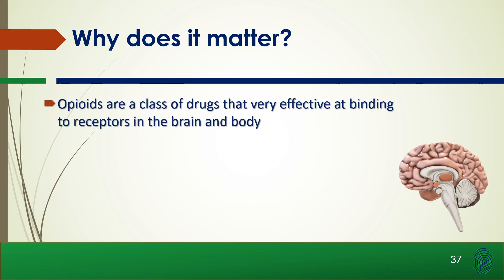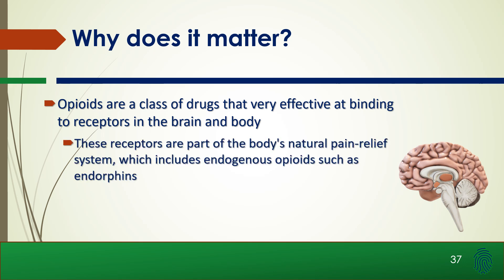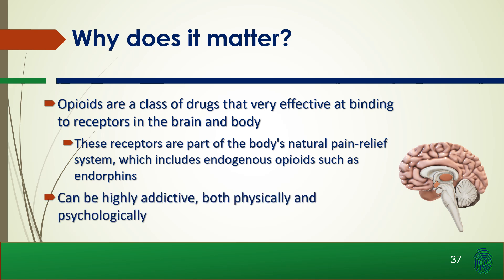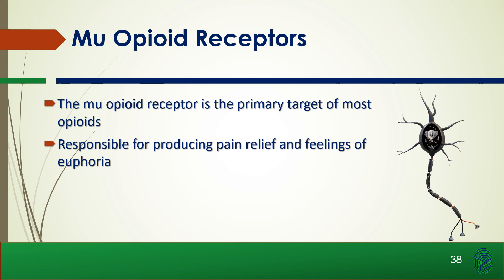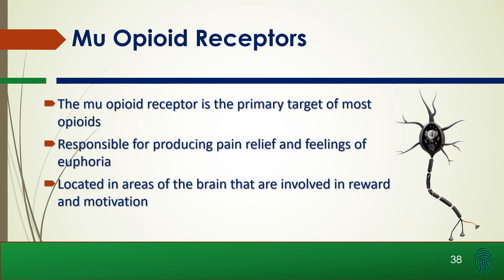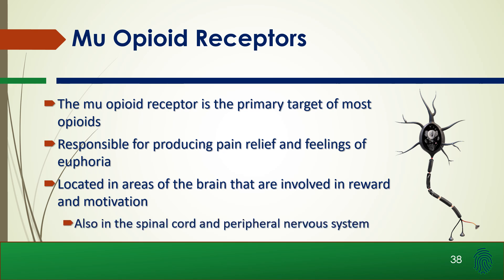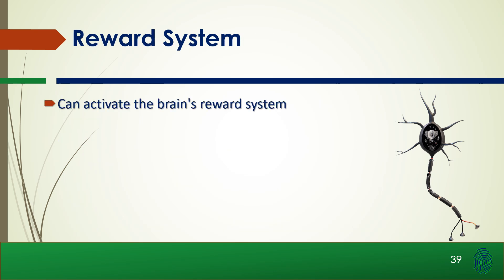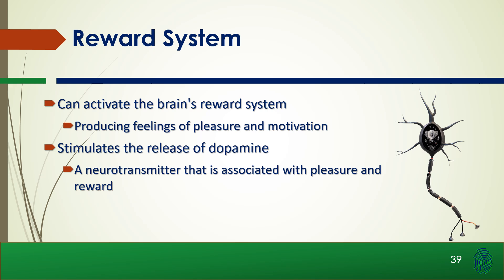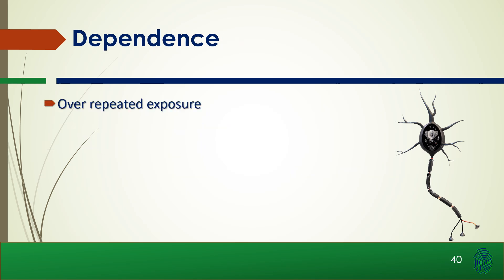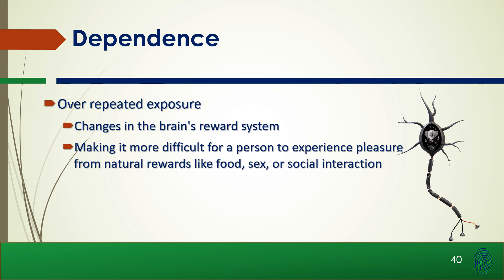Why does this matter? Opioids are a class of drugs that are very effective at binding to receptors in the brain and body. These receptors are part of the body's natural pain relief system, which includes endogenous opioids such as endorphins, and opioids can be highly addictive both physically and psychologically. The mu opioid receptor is the primary target for most opioids, responsible for producing pain relief and feelings of euphoria. Located in areas of the brain involved in reward and motivation, as well as the spinal cord and peripheral nervous system, these receptors activate the brain's reward system, stimulating the release of dopamine — a neurotransmitter associated with pleasure and reward. Over repeated use, this leads to dependence and changes the brain's reward system, making it more difficult to experience pleasure from natural rewards, contributing to the cycle of addiction.